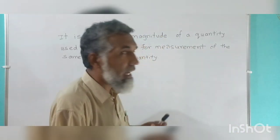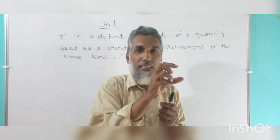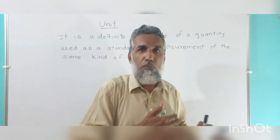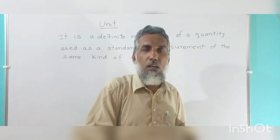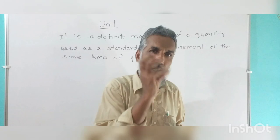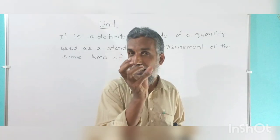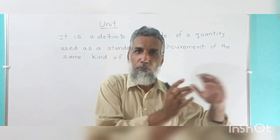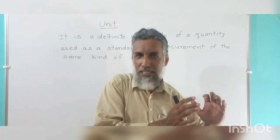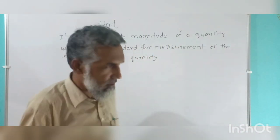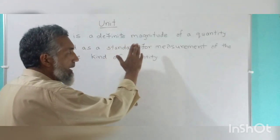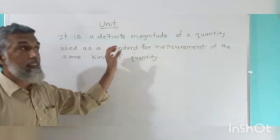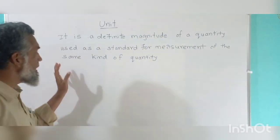That definite mass is used as a standard in the measurement of the same kind of quantity. Suppose you want to make a measurement of the mass of sugar or rice — you use that one-kilogram standard. So, a unit is a definite magnitude of a quantity used as a standard for measurement of the same kind of quantity.